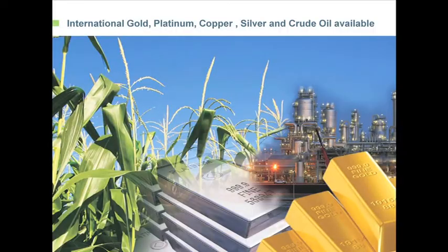Looking at the other foreign commodities listed — particularly metals and energy — we've done the same process as with corn and looked at the international products. Today, although the JSC has been able to offer gold for many years, we now offer the international gold price in RAND. We also have platinum, copper, silver, and a crude oil contract which benchmarks the West Texas Intermediate oil contract.